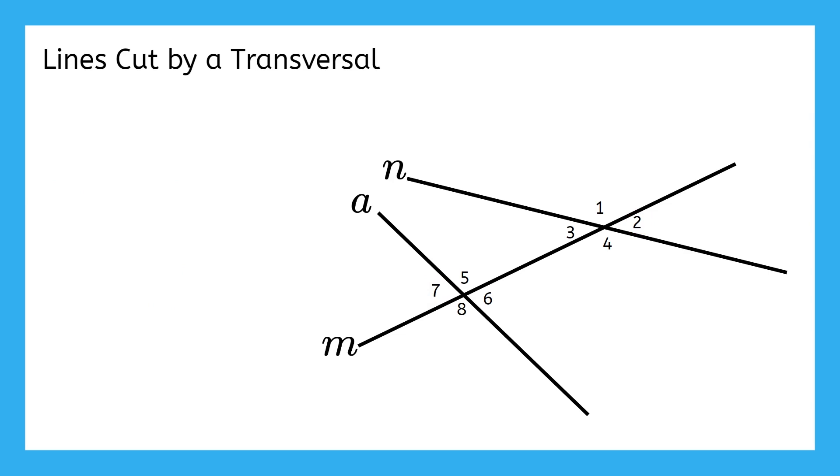Next, let's talk about our interior angles. Imagine all the meat and the cheese inside that hamburger. Which angles are our interior angles? Those would be angles 3, 4, 5, and 6.